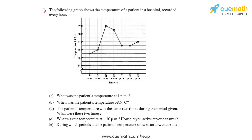Question number one of this first exercise gives us a line graph which shows the temperature of a patient in a hospital recorded every hour. The horizontal axis, or x-axis, represents the time in hours, and the y-axis, or vertical axis, represents the temperature in degrees Celsius. We'll observe this graph and answer the questions that follow, taking each question one by one.